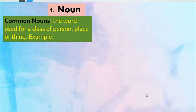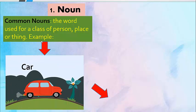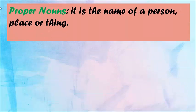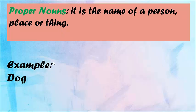Firstly, noun. There are different types of nouns. Common nouns are the word used for a class of person, place, or thing. Example: car, man. Proper noun is the name of a person, place, or thing. Example: talk.